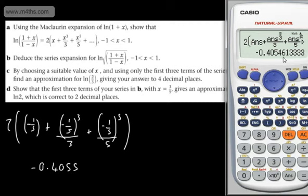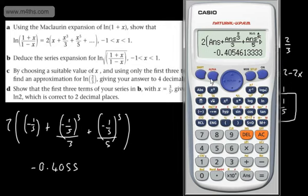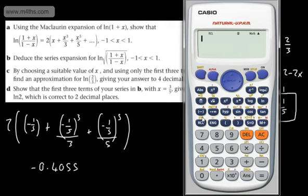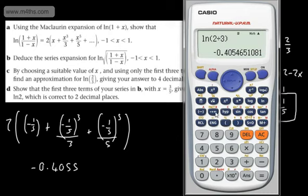I've rounded that to four decimal places. If you want to store this value in the calculator, hit Shift, Store, and put it in as A. Now let's just check the natural log of 2/3 directly — that's pretty good, it matches. If it were something completely different, we'd need to check our working, but that's good to go.